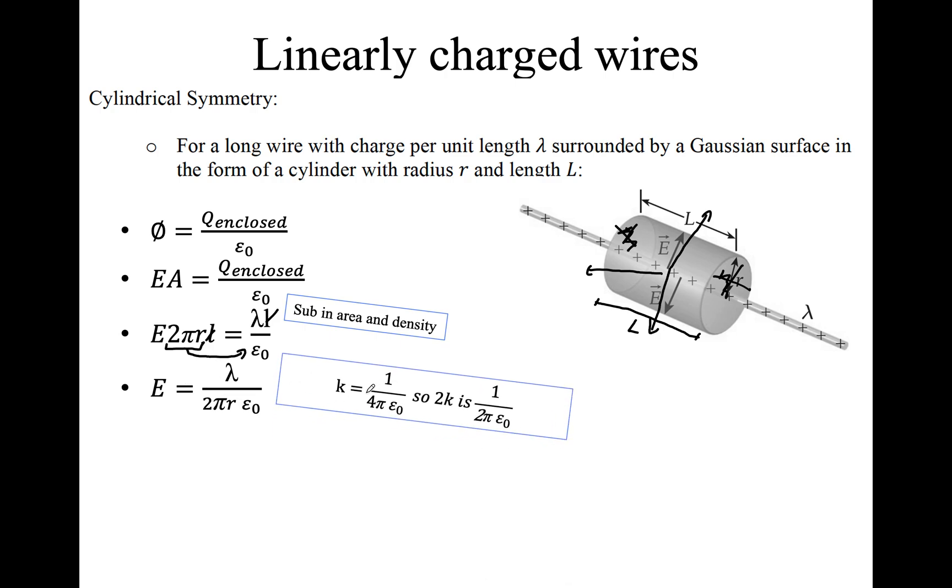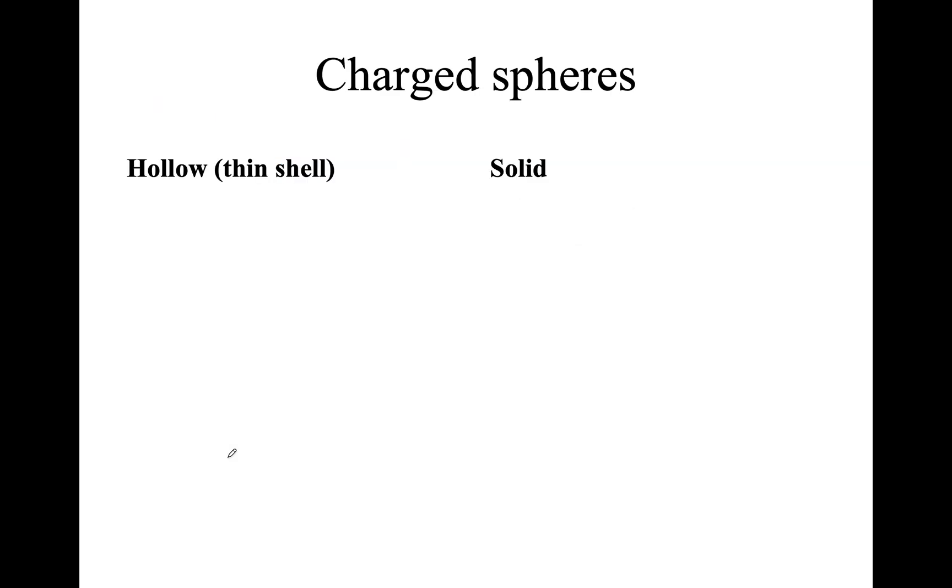So that leaves us with this. We can make this look a little bit easier and neater. If we realize that k is 1 over 4 pi epsilon 0. So if I double a quarter, a quarter plus a quarter, it becomes a half. So 2k will become 1 over 2 pi epsilon 0. That's interesting. Because the imaginary one sitting over here, 1 over 2 pi epsilon 0, so we can substitute that instead with 2k. Put that in and you leave with this formula here. So this is how you find a linearly charged wire. You can use this to solve any question to find the electric field around a wire. You just really need to know the density and how far away you are. Those are the two factors that will affect the electric field.